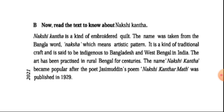The name Nokshikatha became popular after the poet Jasimuddin's poem 'Nokshikathar Math' was published in 1929. Jasimuddin is known as 'polli kobi' — the rural poet. After his poem was published, the name became very well known. Before that, many people knew about it but did not give it so much importance.